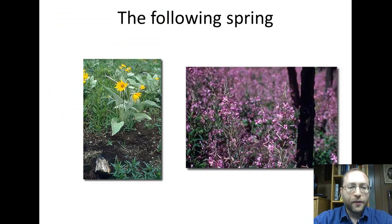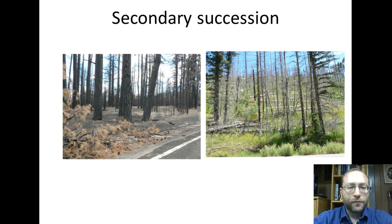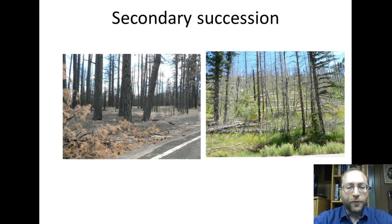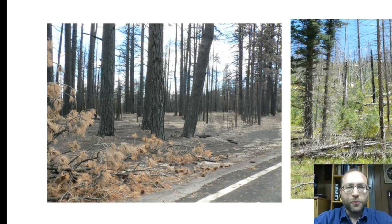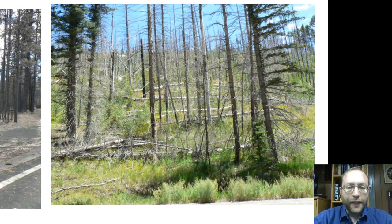The following spring, the pioneer community came up — basically fields, grasslands, and lots and lots of wildflowers. Here you see a similar community just north of Grand Canyon on the Kaibab Plateau. These are from two forest fires: the one on the left, the forest fire was just a few months before; on the right, eight years have gone by. You go from basically nothing but soil to grassland.